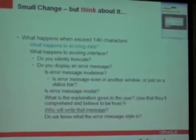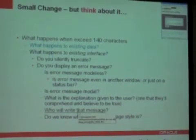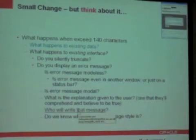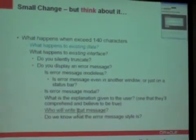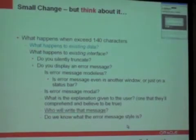What is the explanation given to the user — one that they'll comprehend and believe to be true? Who will write that message? I fly on United Airlines a lot, and I used the United Airlines app on my mobile phone. I typed in something wrong, hit enter, and the error message I got back said 'uncommon error' instead of 'unknown error,' and 'please try agent later' instead of 'again.' So who's going to write this message in a way that makes sense to your end users, that doesn't make them mad? What is the error message style? Are you going to invent a brand new way to do this? Already, we've got a lot of things to think about.